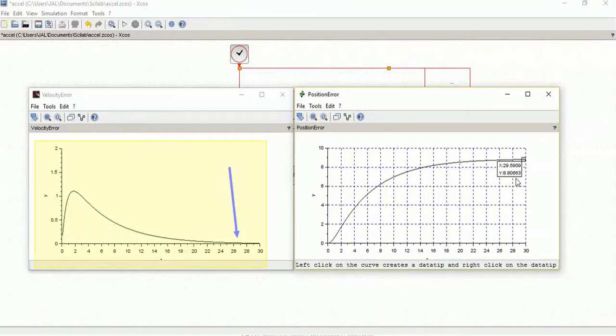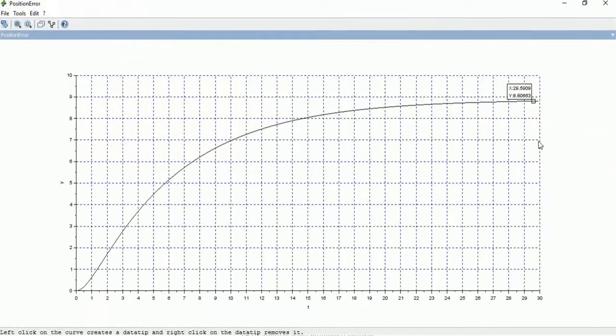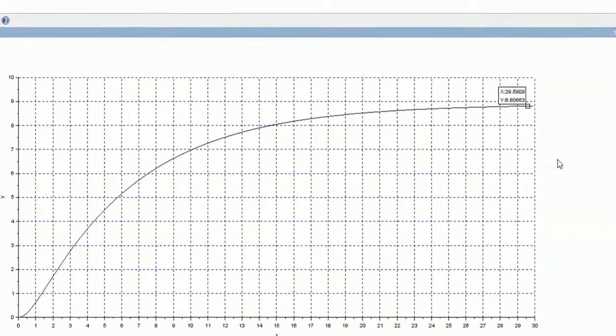As expected, the velocity error converges to zero. This is very important because any offset or bias in the velocity estimate will produce a drift or divergence in the position. Here we can verify the final value of the position error, which is close to the calculated value.